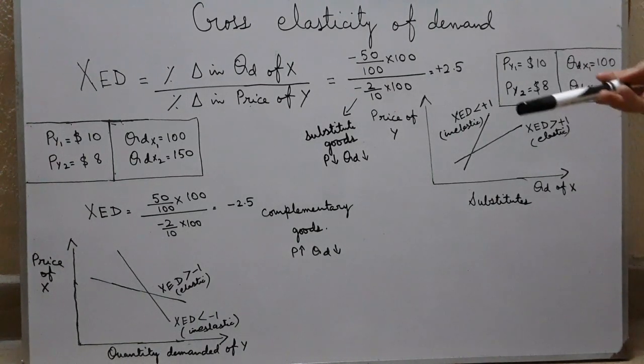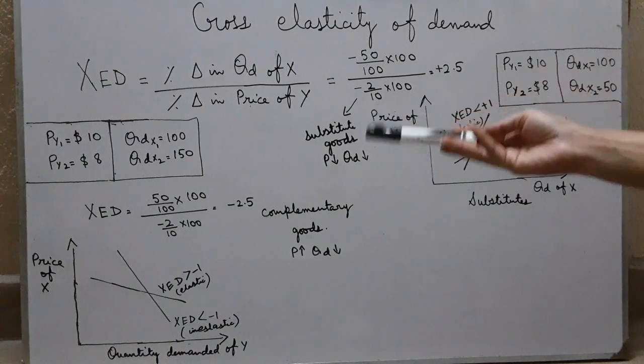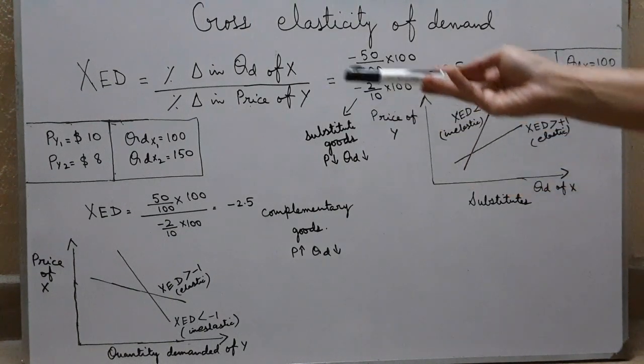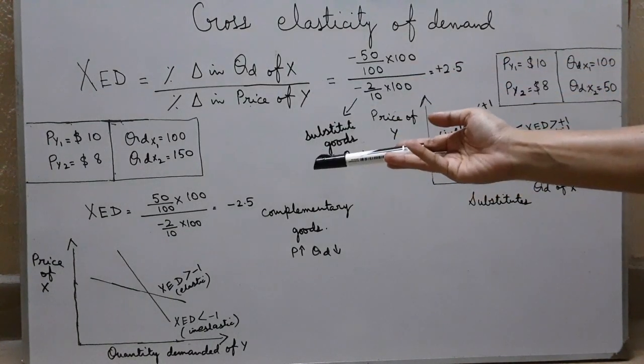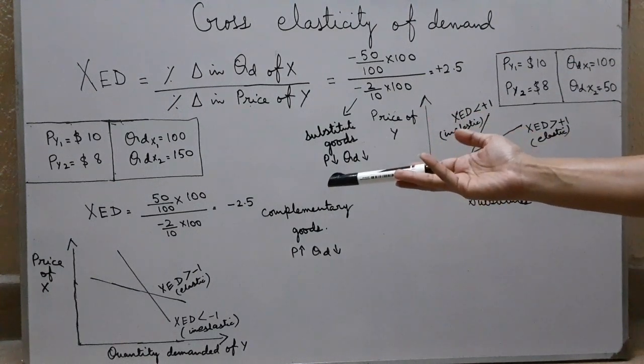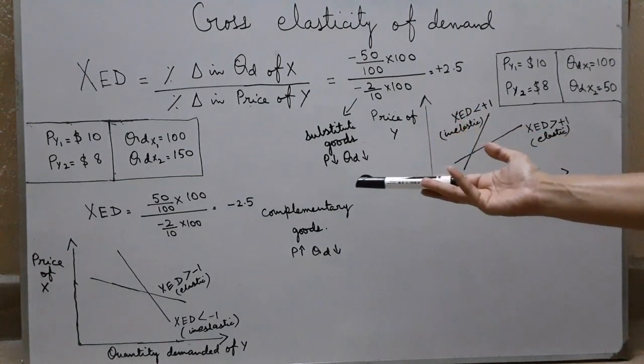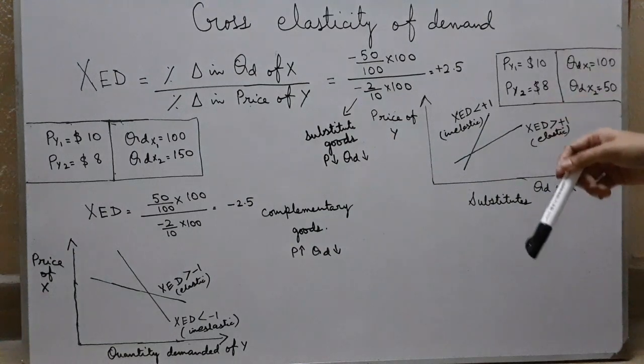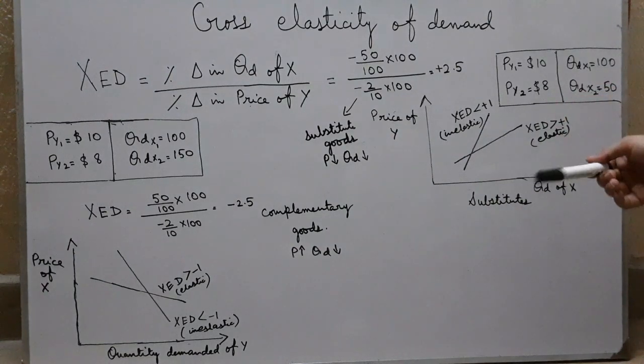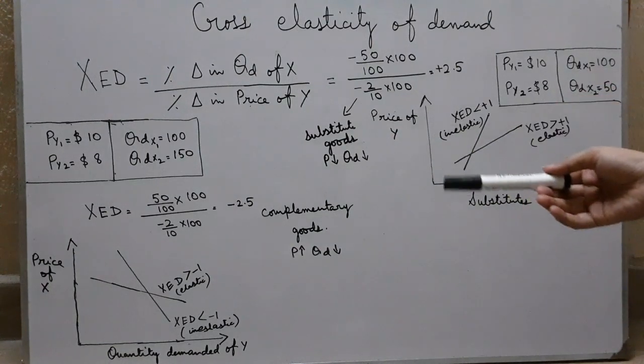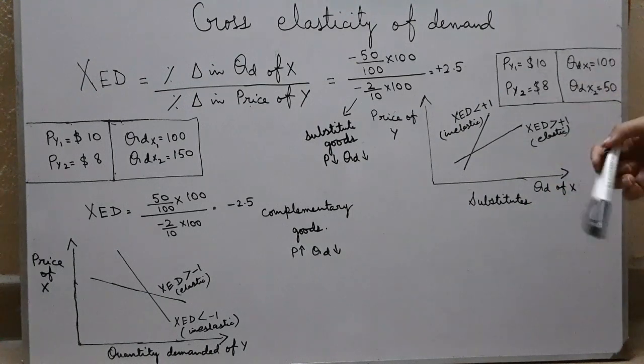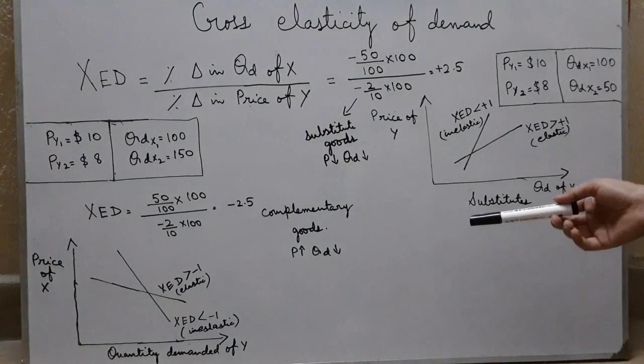In the same way, I have calculated values for complementary goods. Again, difference divided by original multiplied by 100 on both sides. The answer comes out to negative 2.5. And again, in this question, we cannot ignore the signs because that is the major thing which will tell us whether it is a complementary good or substitute good.